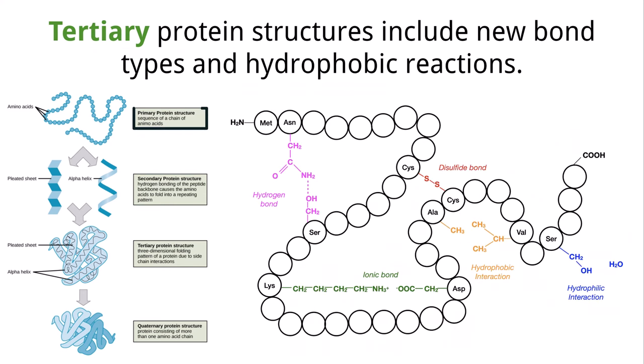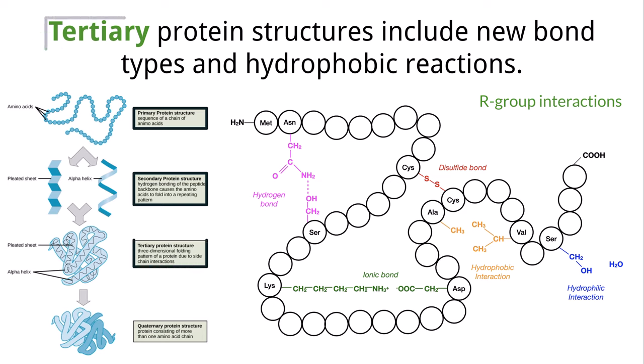We have looked at the primary and secondary structures of proteins, but as we discussed earlier, those R groups are able to bond and create folds within the protein structure. When that happens and more structures within the amino acid chain interact with each other, it creates a protein tertiary structure.